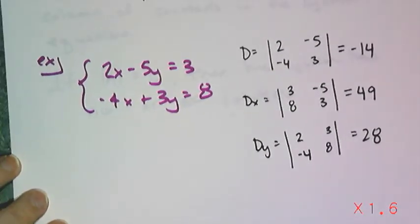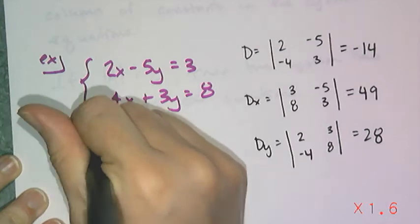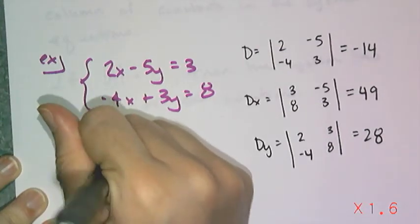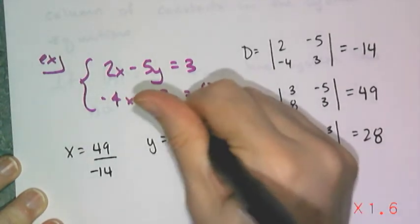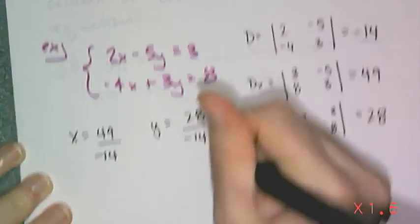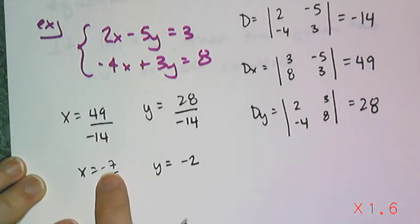And I get those values, so I know that the x value has to be 49 over negative 14, and y has to be 28 over negative 14, which gives me that x equals negative 7 halves and y equals negative 2.